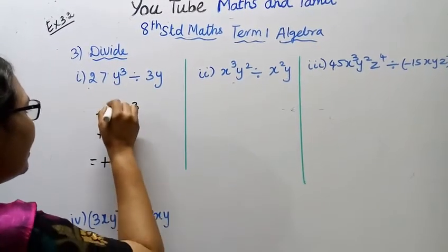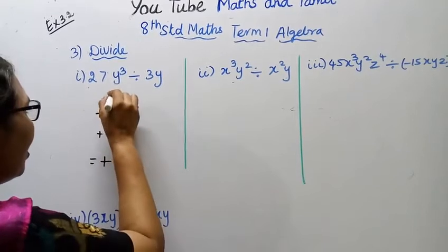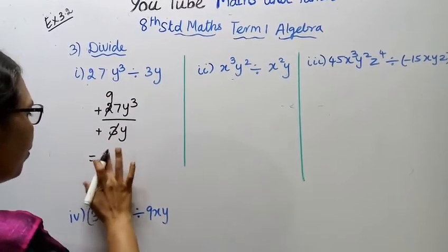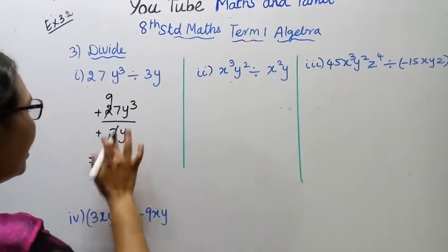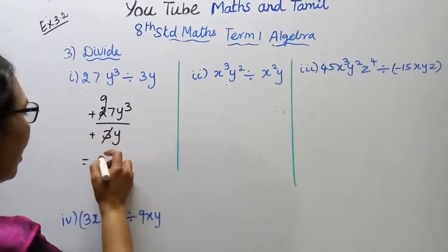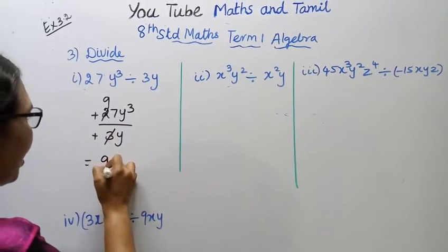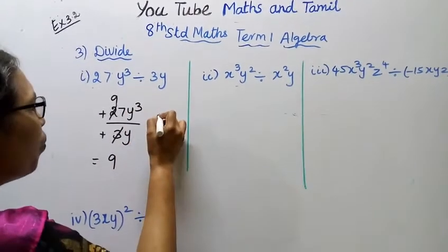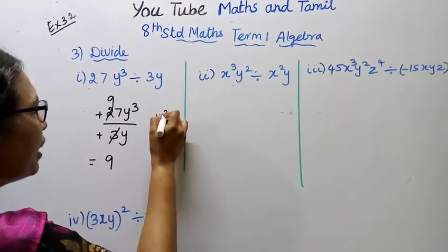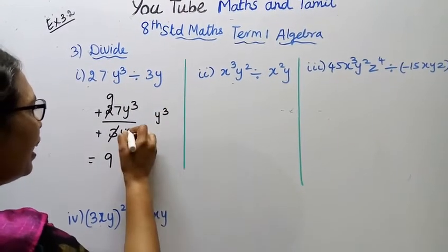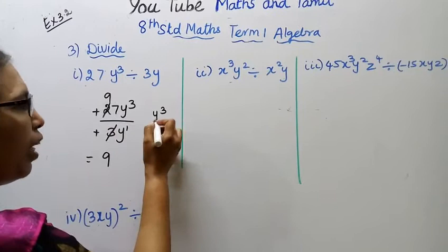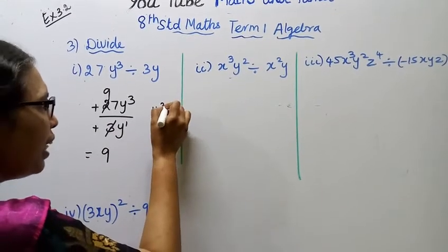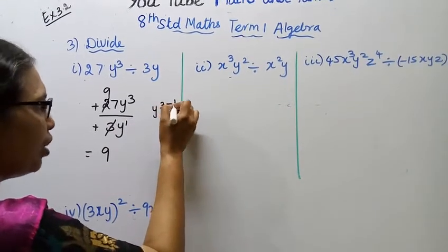27y cube divided by 3y. Plus sign is plus, plus into plus is plus. 3 nines are 27, so the number part gives 9. Then y cube divided by y: y power 3 minus 1.